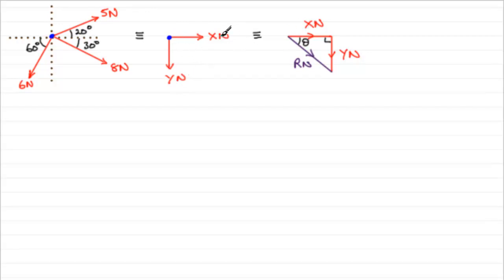And then once we have these components we can form this right angle triangle and work out what our resultant R newtons is going to be. We can also find out the angle that it's inclined to x just by using normal right angle trigonometry.